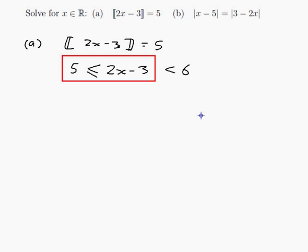5 is less than or equal to 2x minus 3. We can add 3 to both sides of that, and that would give us 8 is less than or equal to 2x. And if we just look at this side here, we can add 3 to both sides of that too, and that would give us 2x is less than 9.